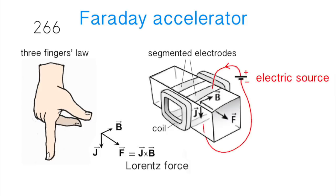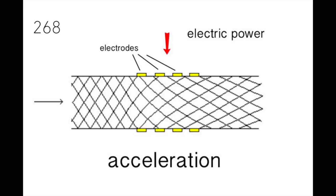You see on the right the channel, the coils and the segmented electrodes. The electromagnetic force J cross B is called the Lorentz force.